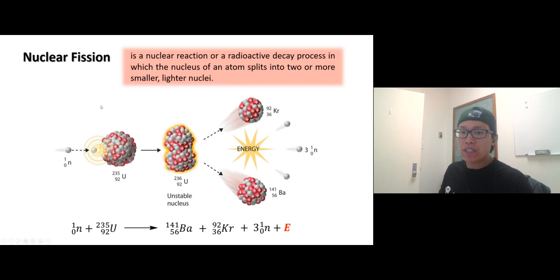Nuclear fission is basically a fragmentation of a heavy nucleus with mass number over 200 into smaller and more stable nuclei. Take a look here at uranium-235. Uranium is actually stable because it exists on Earth's surface, though it's slightly radioactive.